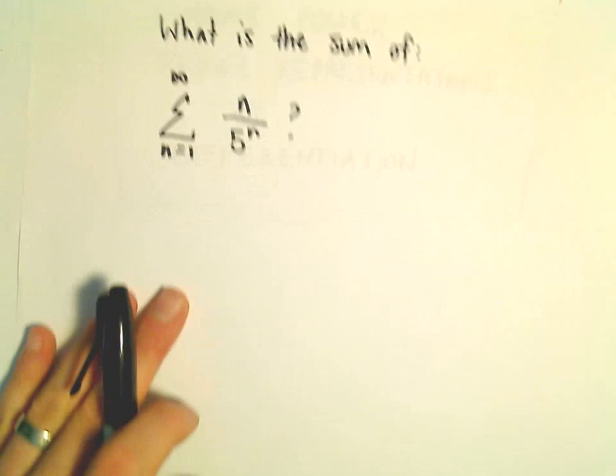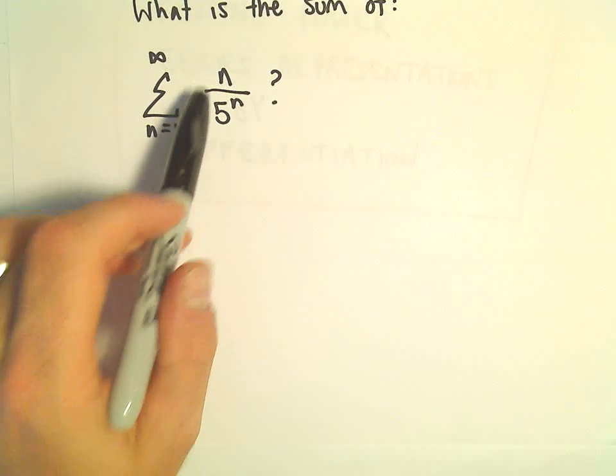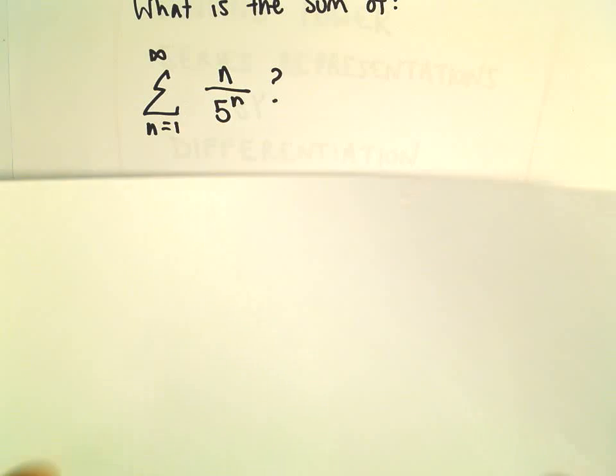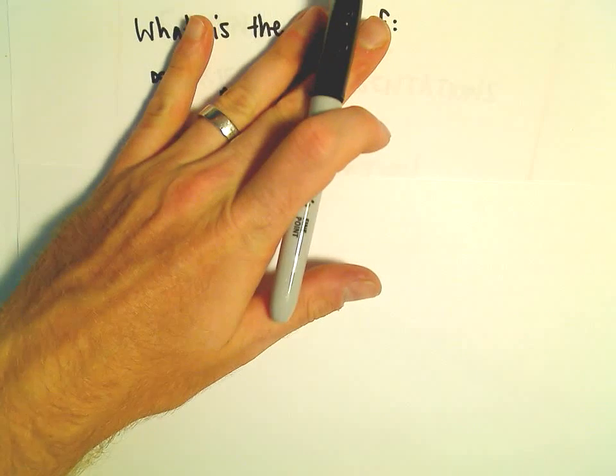All right, in this video we're going to find the sum of the series n equals 1 to infinity of n over 5 to the n. I think this has the potential to be a confusing little problem.